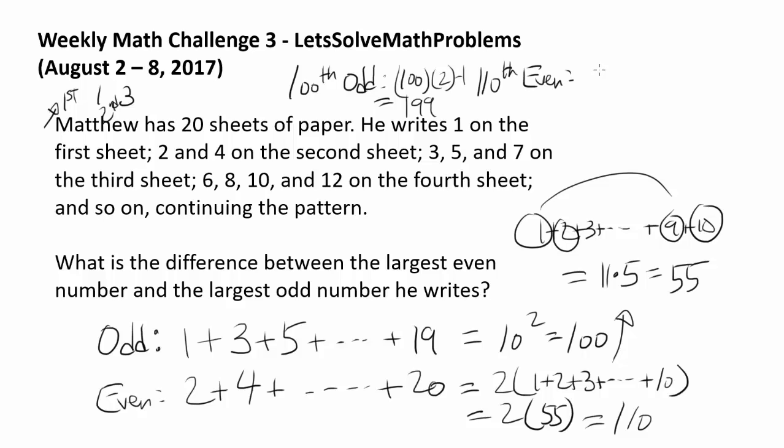110th even number is going to be, well, let's think about this. First even number is 2, second even number is 4. So all we have to do is 110 times 2, which is 220. So our answer is 220 minus 199 or 21. And that's it.